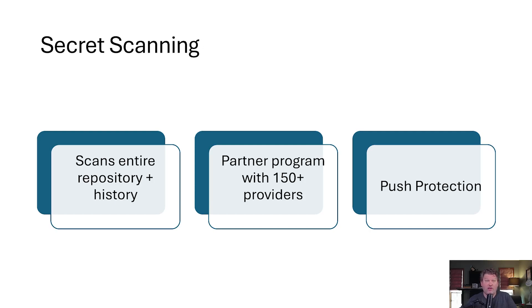The second component is secret scanning. This one's crucial for preventing credential leaks. Secret scanning automatically searches your entire repository, including your git history, issues, and pull requests for sensitive information such as API keys, tokens, and passwords. It currently detects over 200 different types of secrets and works with about 150 different service providers through GitHub's partner program. When a secret is detected, GitHub can even notify the service provider directly so they can take action like revoking the credentials. You can also create your own regular expressions for secrets that you want to detect. The really powerful part is push protection — this feature prevents developers from committing secrets in the first place by blocking pushes that contain detected secrets. It's proactive security that stops the problems before they start.